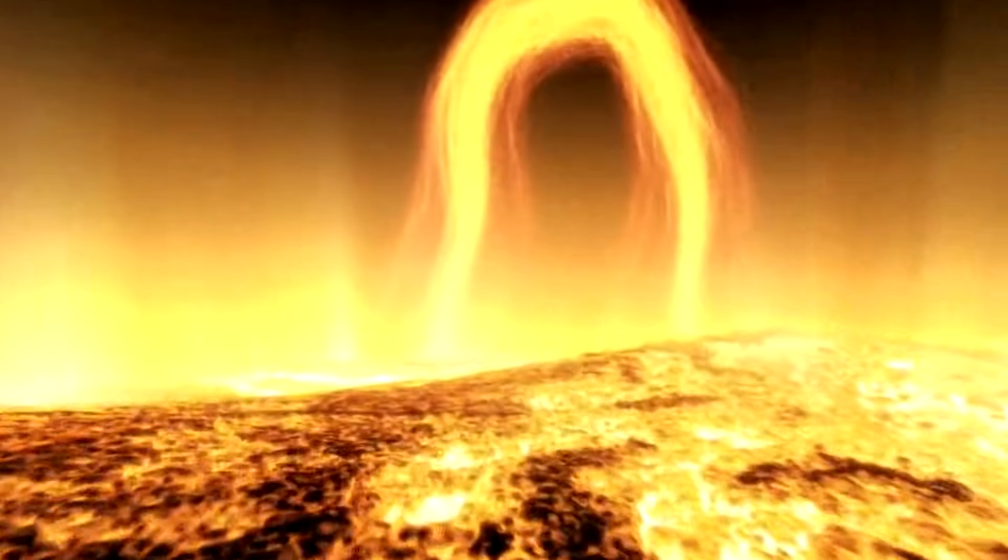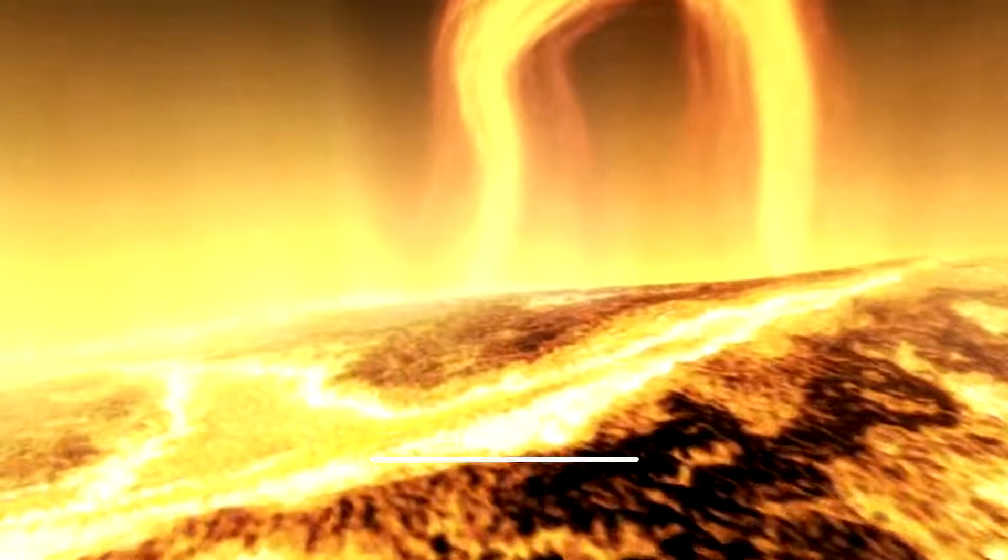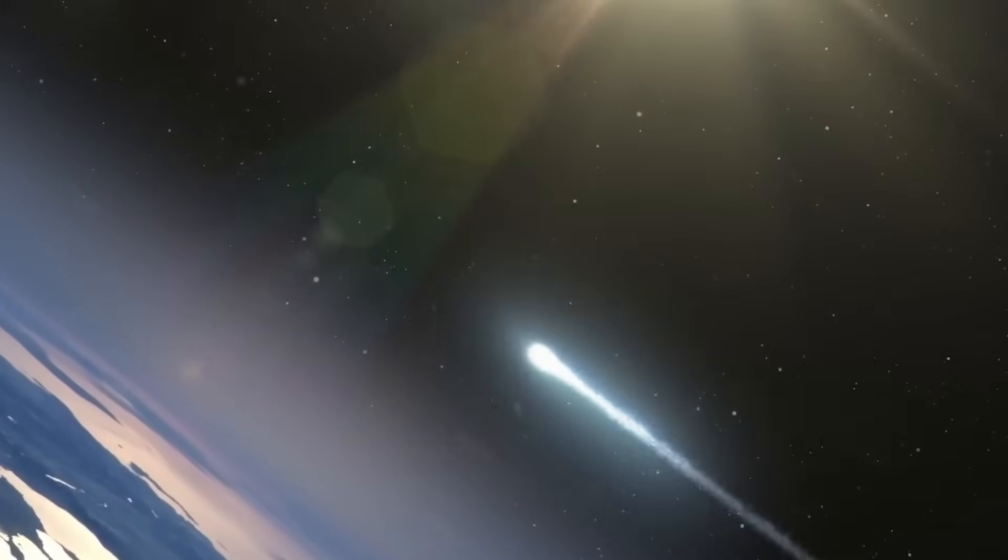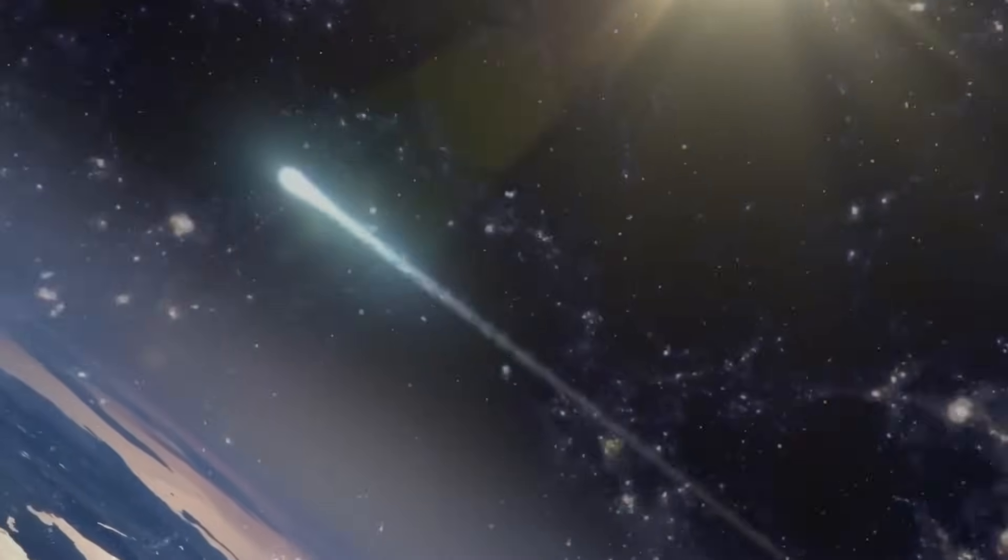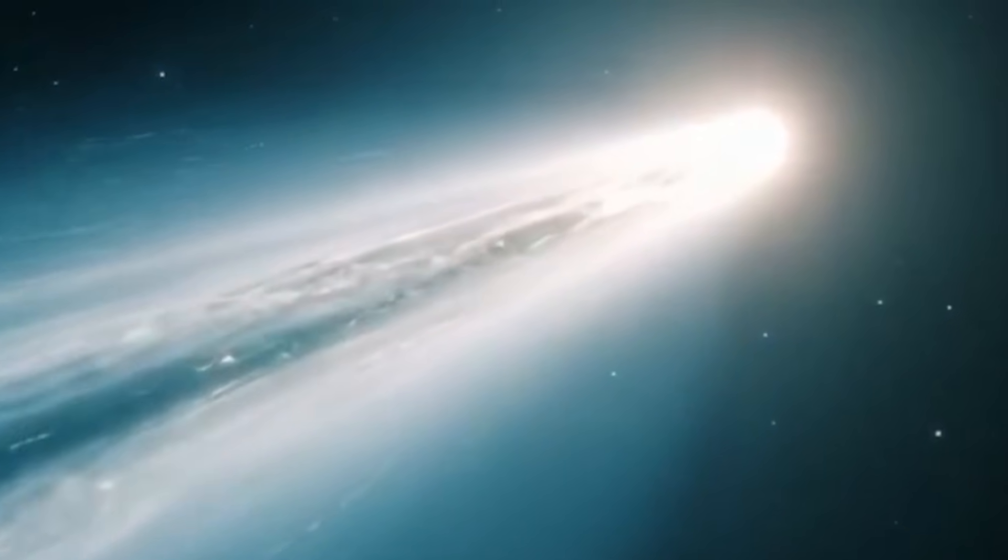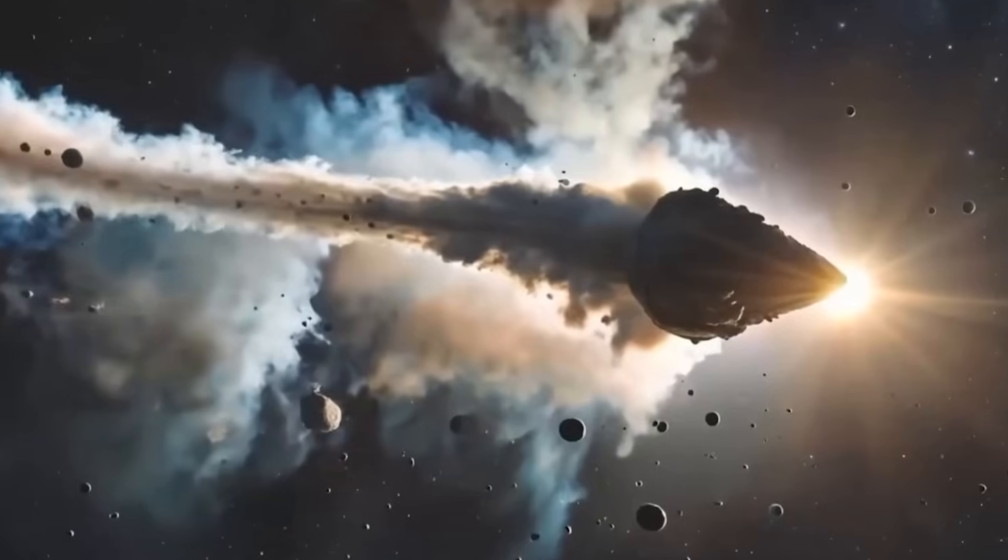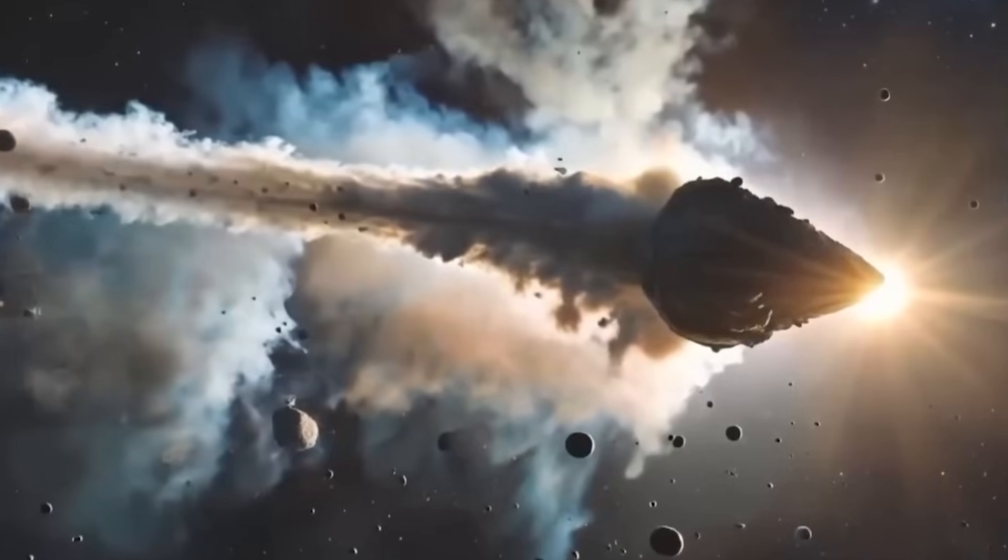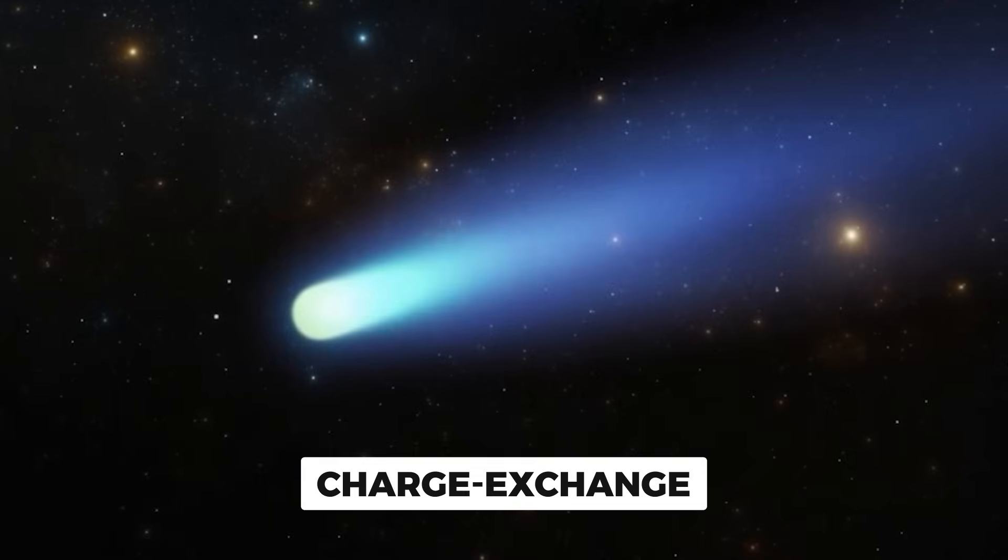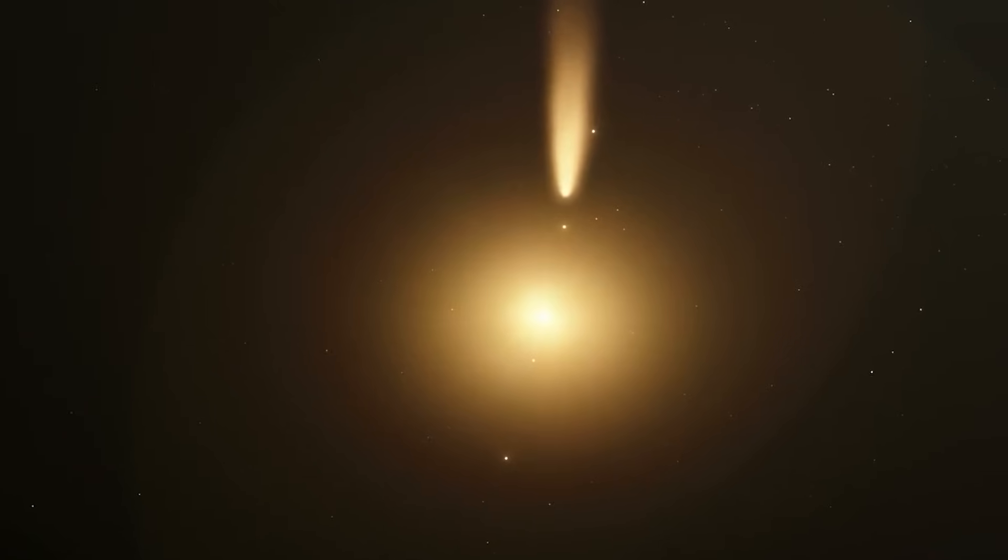Now our sun is constantly blasting out charged particles in what we call the solar wind. These are atoms that have lost electrons, making them positively charged ions, mostly hydrogen, but also carbon, nitrogen, and oxygen. When these high-energy solar wind ions slam into the neutral gas molecules in the comet's coma, they steal electrons in a process called charge exchange.